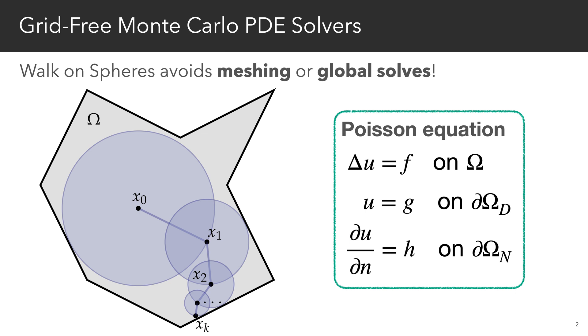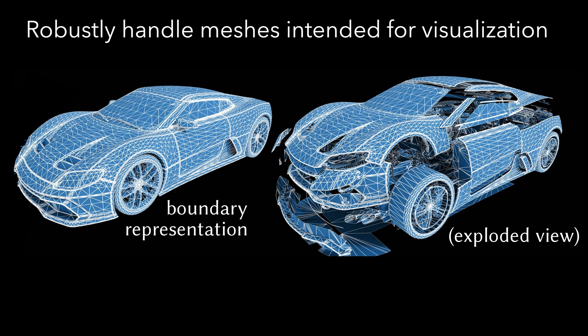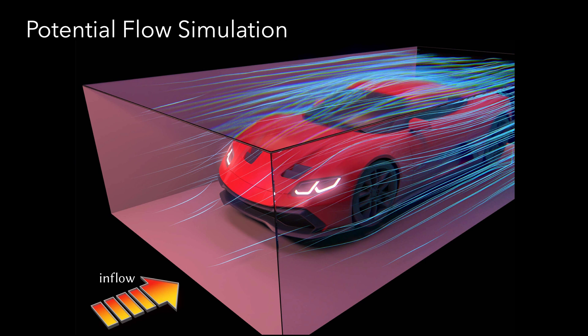they can do so without any volumetric meshing or global solves. This makes them prime candidates for problems in visual and geometric computing, such as this example of a potential flow simulation in a wind tunnel.